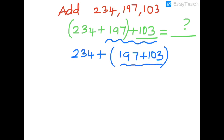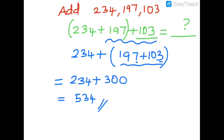Why make this group? Because the unit digits are 7 and 3 — 7 plus 3 gives 10, so we get a zero ending number, making addition easy. So 197 plus 103 equals 300. Then 234 plus 300 equals 534. We get the answer easily. This is the associative property — by rearranging into a group we solve in a fast manner.